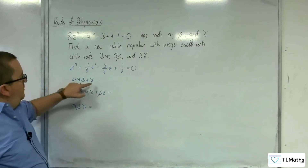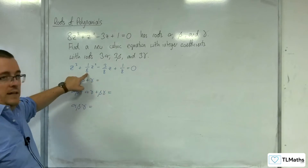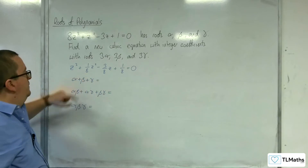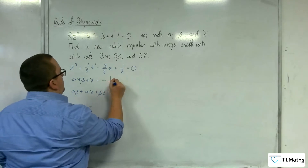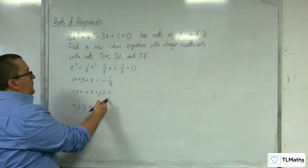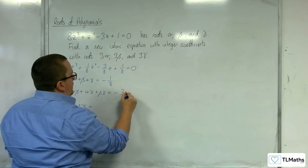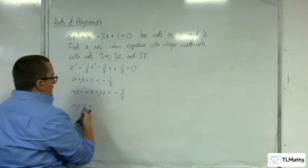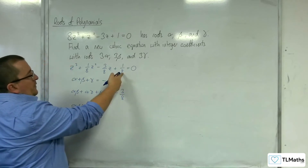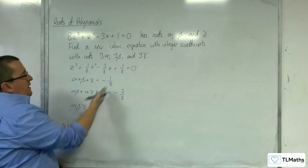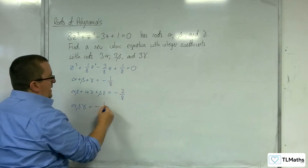Alpha plus beta plus gamma is the negative of the coefficient of z squared, so that's minus one eighth. Alpha beta plus alpha gamma plus beta gamma is the negative of the coefficient of z, so minus three eighths. And alpha beta gamma is the negative of the constant term, so minus one eighth.